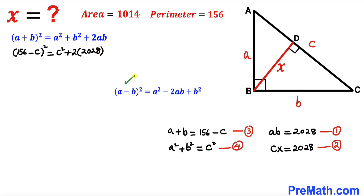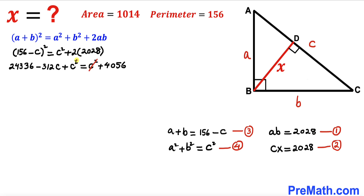Applying the identity (A minus B) squared equals A squared minus 2AB plus B squared to expand the left-hand side, we get: 24336 minus 312c plus c squared equals c squared plus 4056. The c squared terms cancel from both sides, leaving us with 24336 minus 312c equals 4056.